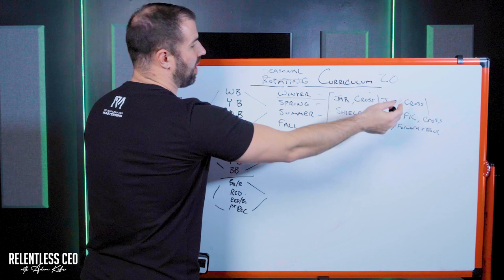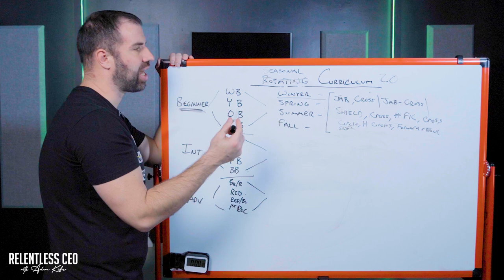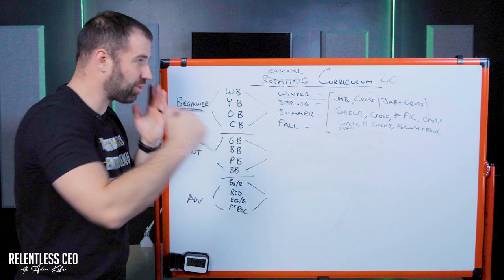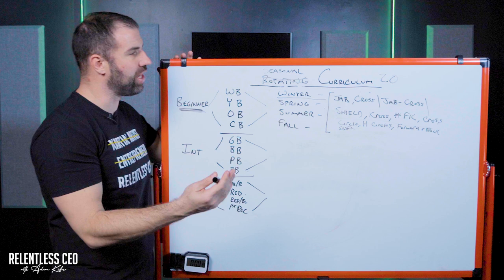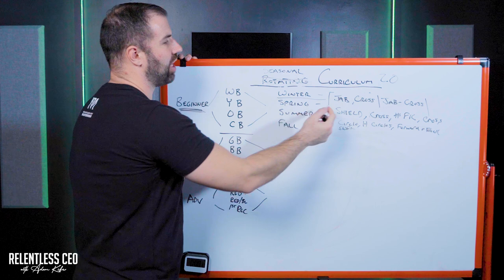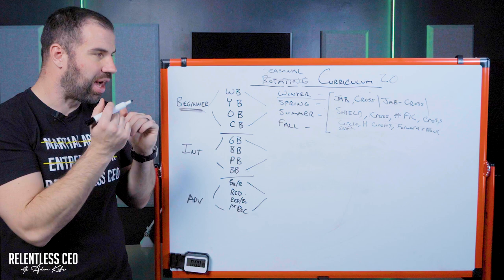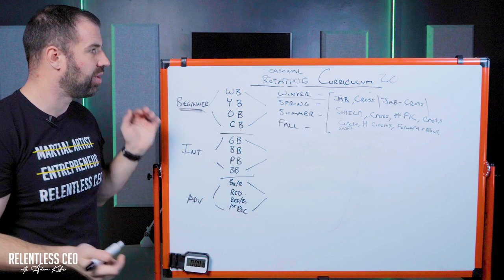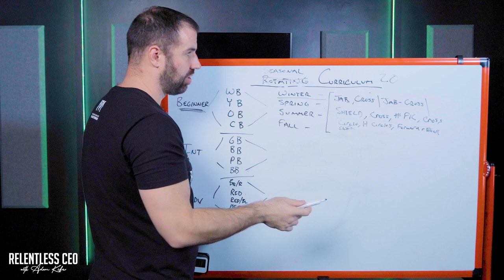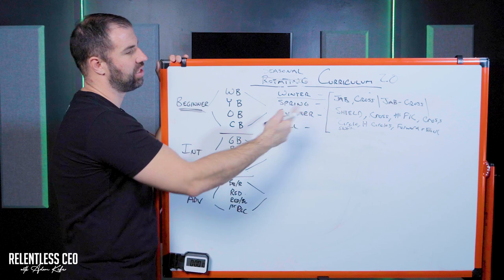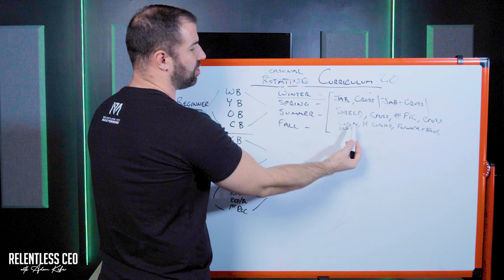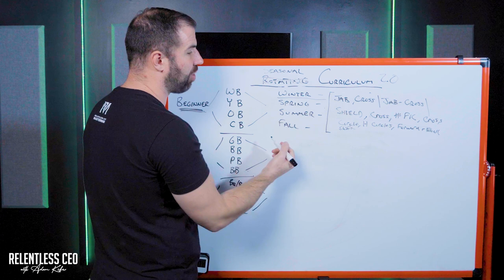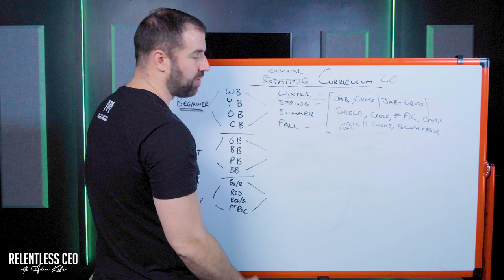Season one might be: jab, cross, jab, cross, shield, cross, number one front kick, cross. Then season two they come in and it's jab, cross, jab, cross, drop cross instead of a shield, and maybe number two front kick instead of number one. Notice the core stays the same from season to season — we're not going from that combo to jab, cross, hook, overhand, leg kick. In their first year, they're really just working front kick and round kick for testing. Then variations of the combo and different variations of footwork. So winter they test on circles and half circles, spring on forward and backward shifts, summer back to circles and half circles, fall back to shifts. For the entire year, they really just have one core curriculum they're mastering.